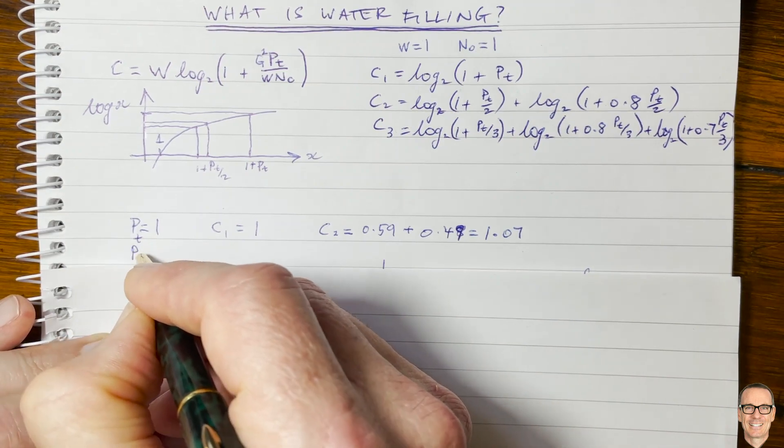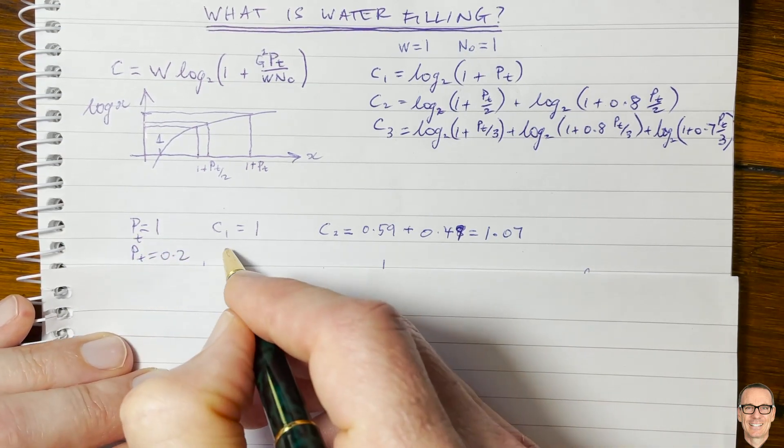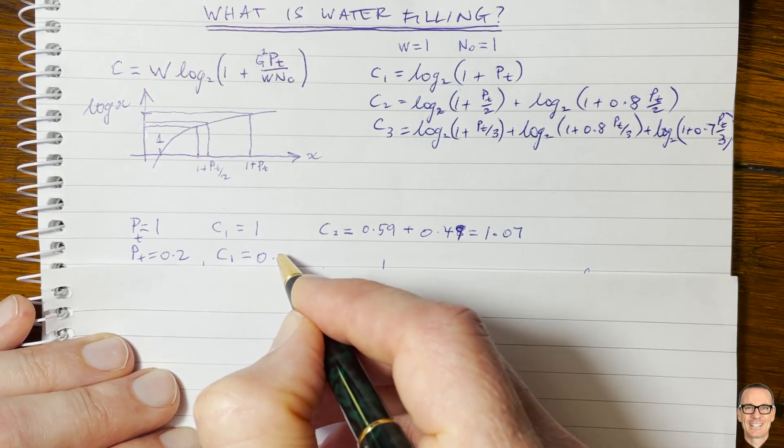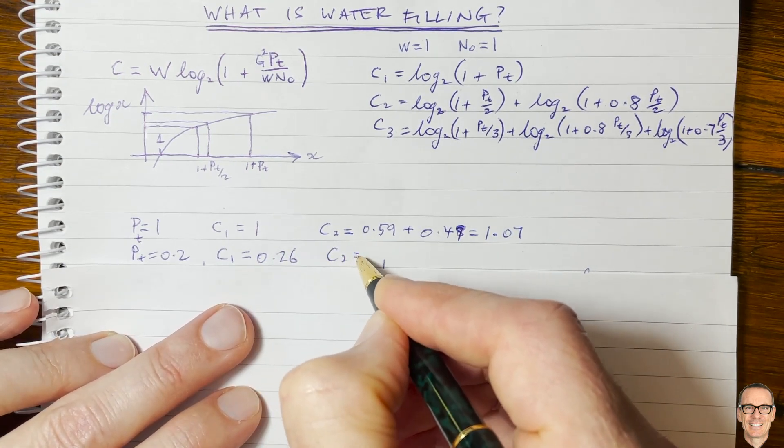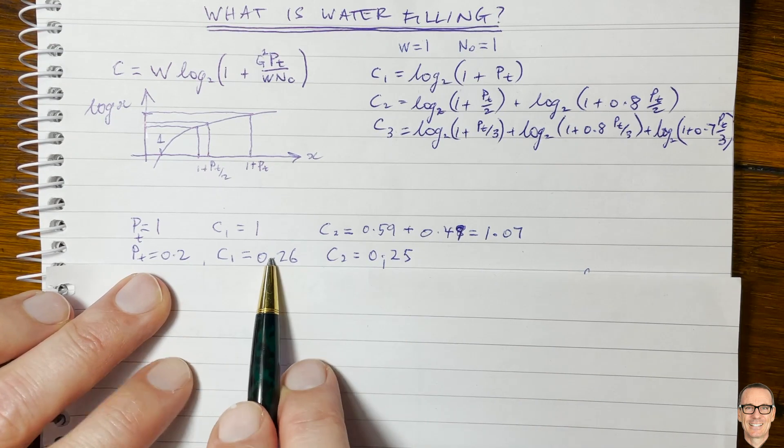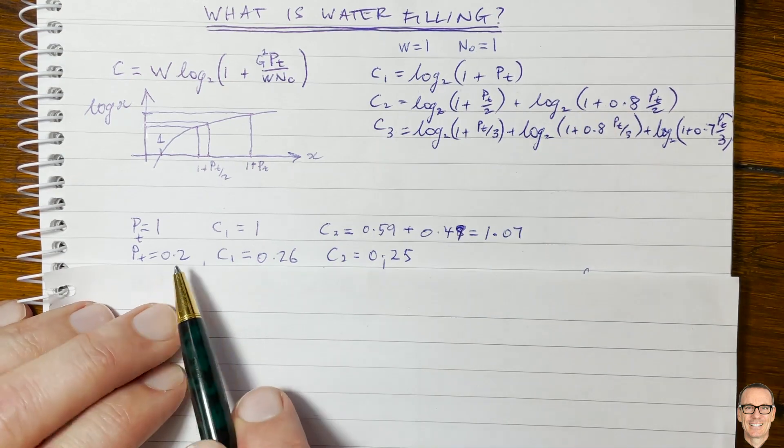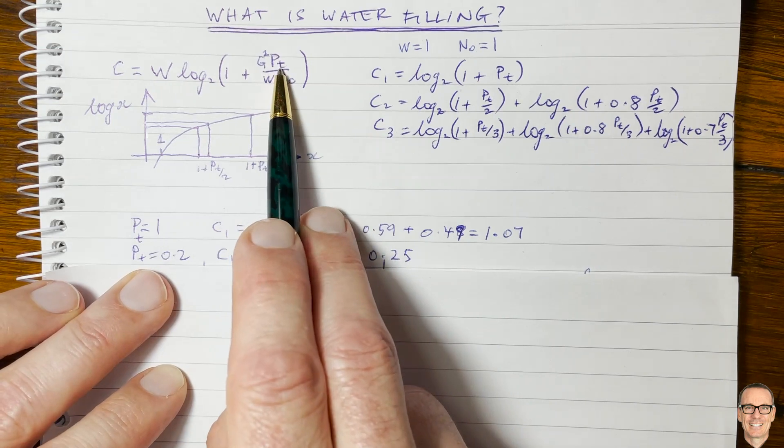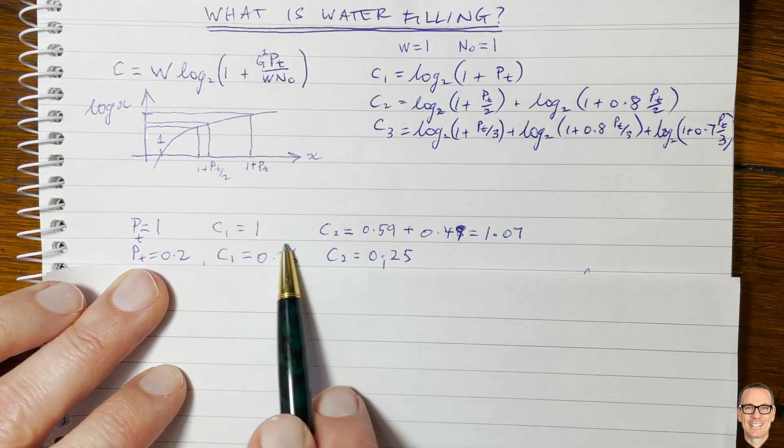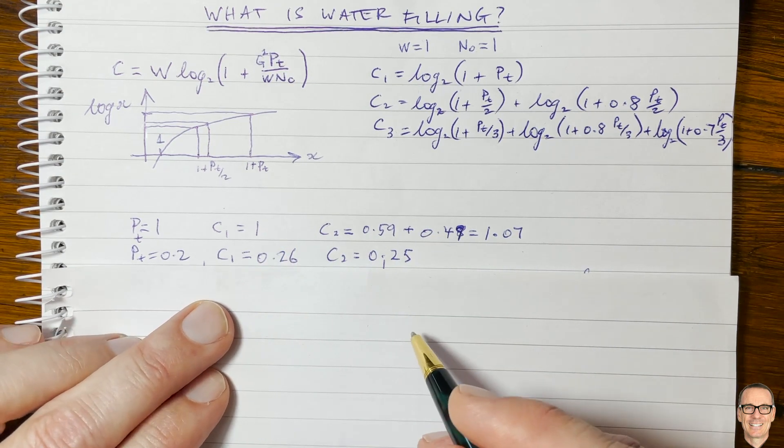What if we only had a power of, I'm just considering just for the moment here, the 2. What if we had a power of 0.2? Well, in this case, the c1 would equal 0.26, and c2 would equal 0.25. So in this case, for this lower power, here's an example of what I talked about before, when I said it's not actually an advantage to use the second sub-channel. So if you have only a power budget, a smaller power budget, a smaller battery in your transmitter, for example, and you've only got 0.2 of power, then you would be better off putting all of that power just in the first channel and not using that second channel.